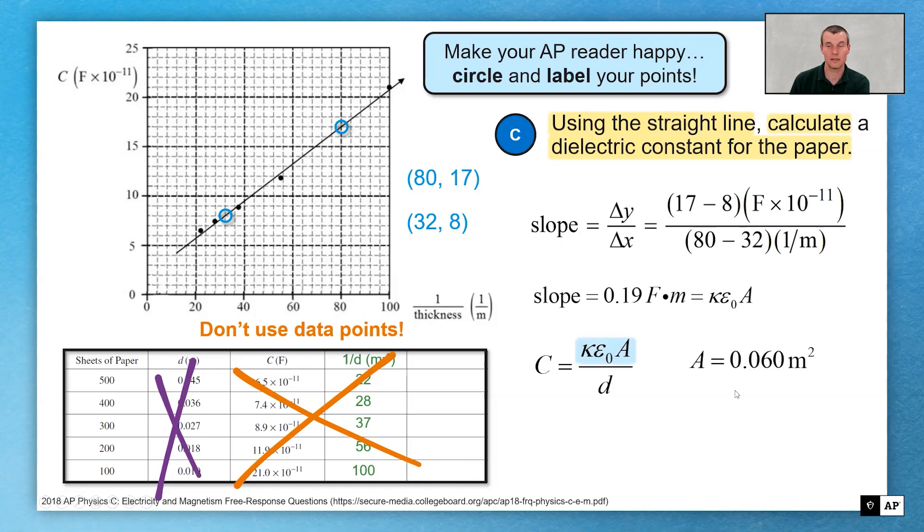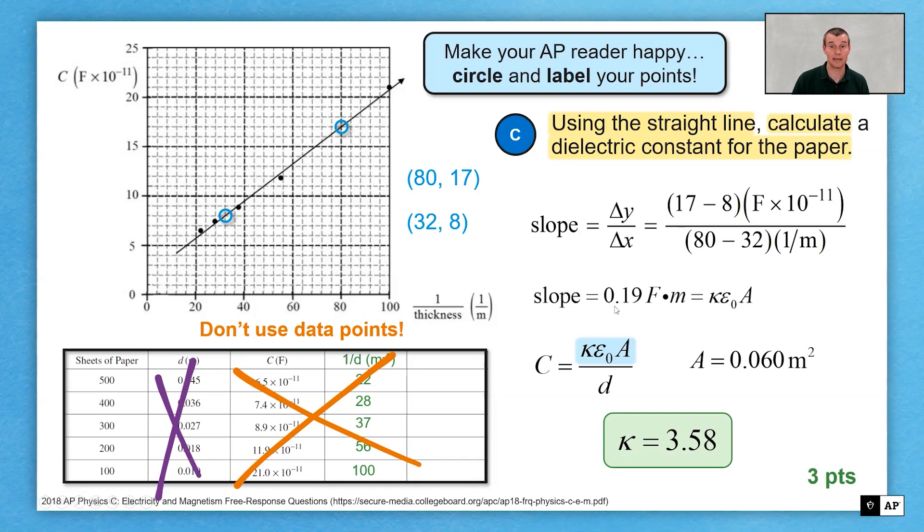We knew that A was given to us in the problem, 0.060. So if we make that substitution with our epsilon not term, we get our answer three points. What are those three points for? For solving for slope generically, for actually relating slope to something within the equation, and then for probably actually solving the equation to get our final answer.